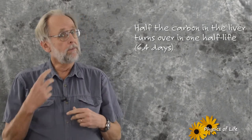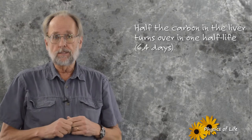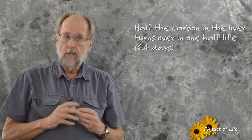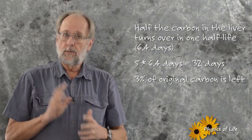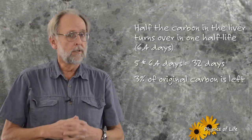Okay, let's focus on the liver. The half-life of 6.4 days means that half the carbon in the liver is replaced every 6.4 days. Within a month, that is over a time representing roughly five half-lives, only about three percent of the liver's original carbon is left.